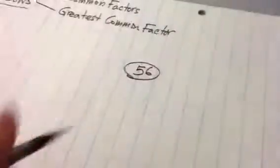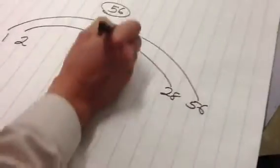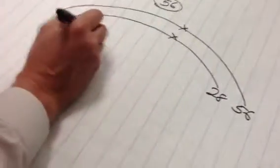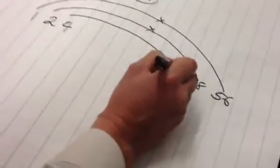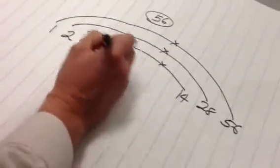We're going to do the same thing for 56. Look at all of the factors that produce 56. So here we go. 1 times 56 produces 56. 2 times 28 produces 56. 4 times 14 produces 56. And 7 times 8 produces 56.